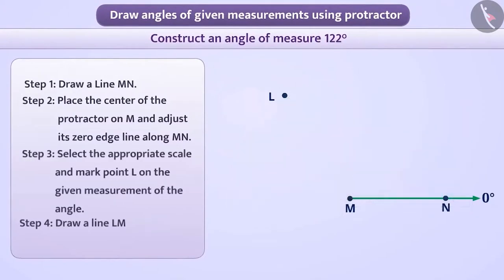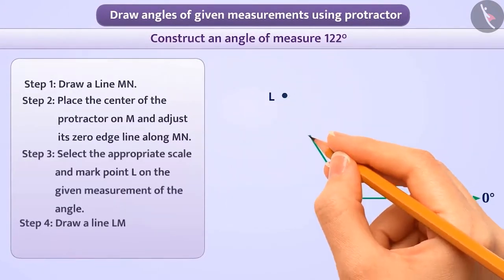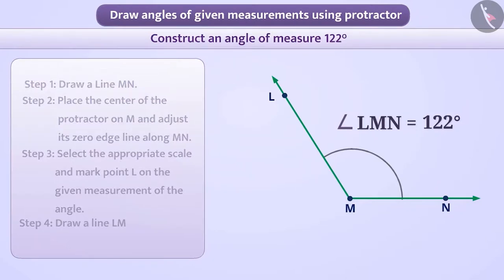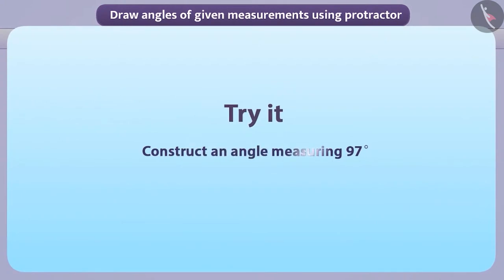Step 4. Now we will draw a line starting from point M and going to point L. Thus, here we have created the angle LMN measuring 122 degrees. Now you pause the video and create an angle measuring 97 degrees. You will definitely be able to do it.